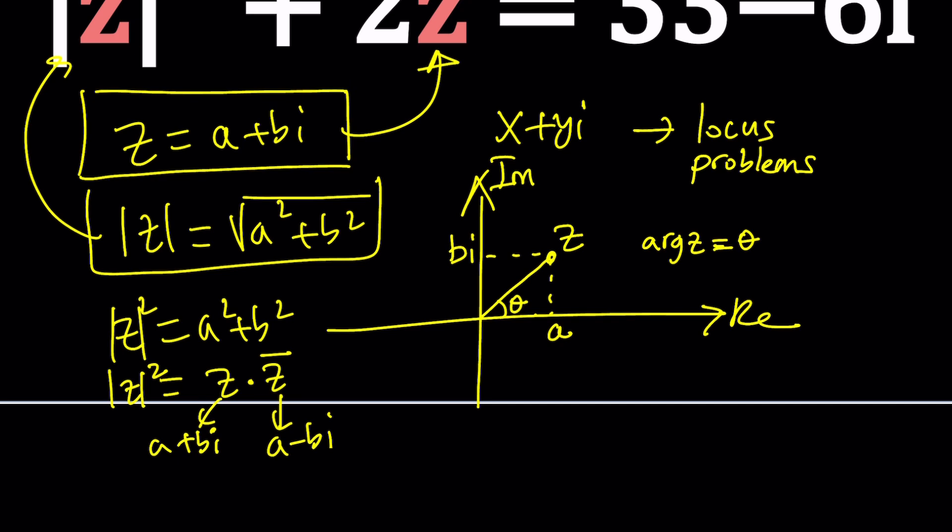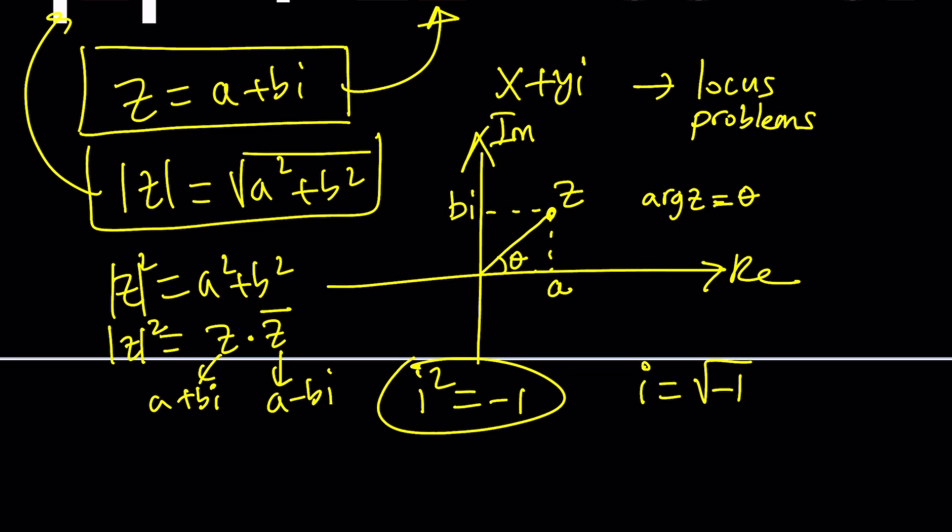Oops, I forgot to tell you: i squared is negative one. So i is basically defined as the square root of negative one. There are two square roots, but one of them is called the principal square root. So after having said that, let's go ahead and dive into this.